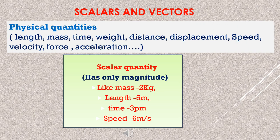Scalar quantities and vector quantities — in short, called scalars and vectors. Suppose you are going to a shop to buy some sugar. You tell the shopkeeper to give 2 kg of sugar, and he gives you a packet of 2 kg. The message you conveyed is complete. Similarly, if you say the length of a table is 2 meters, the message is complete. If you ask me the time, I say 2 pm — the answer is complete. The speed of a worker is 40 km/h — there also the answer is complete. Such quantities are scalar quantities.